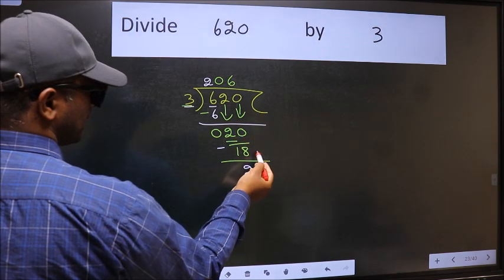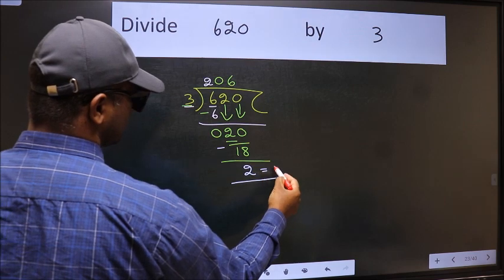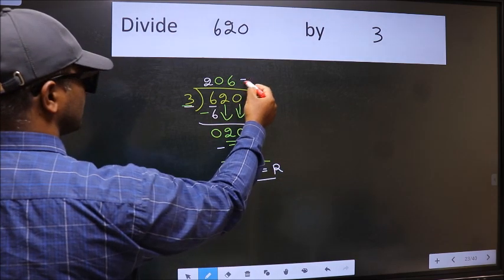No more numbers to bring it down. So, we stop here. This is our remainder and this is our quotient.